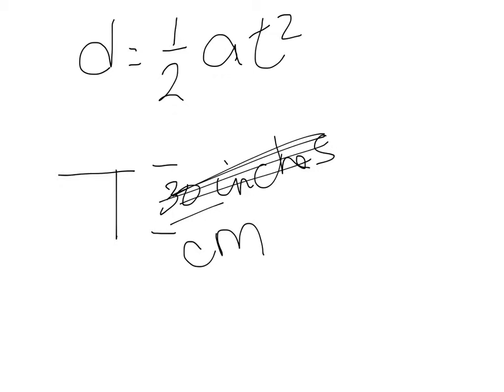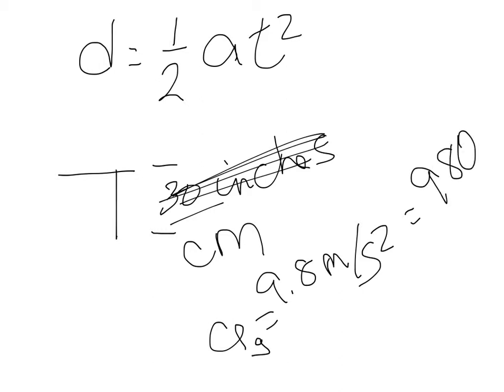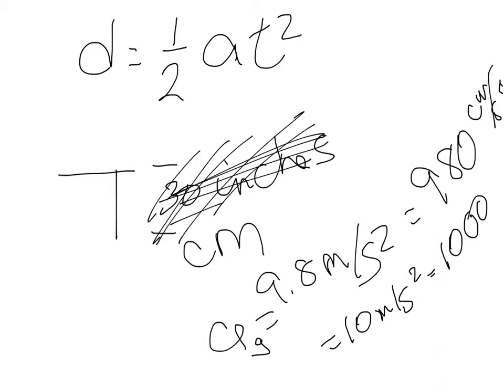If you use centimeters, you have to convert the 9.8 meters per second squared, which is acceleration due to gravity, to 980 centimeters per second squared. Or if you want to use 10 meters per second squared, it's now 1,000. So make sure you keep everything in centimeters. Do not use the inch side of the meter stick.